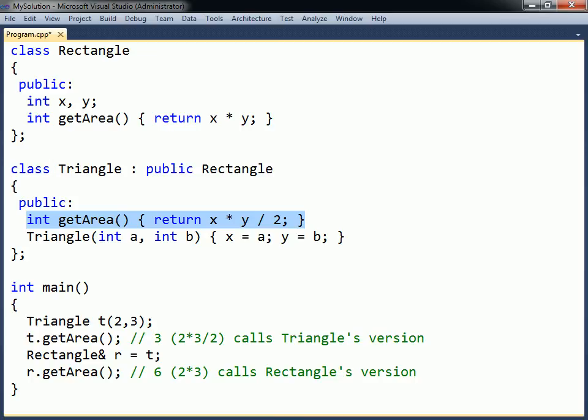This is because the redefined method has only hidden the inherited method. This means that Triangle's implementation is redefined downwards in the class hierarchy to any child classes of Triangle, but not upwards to the base class.